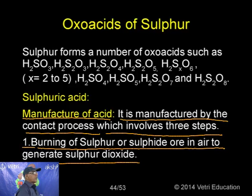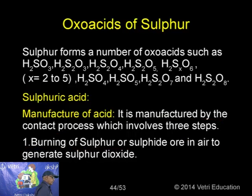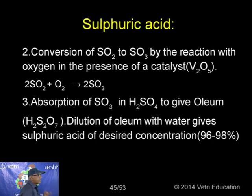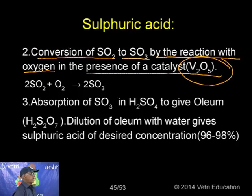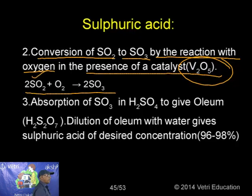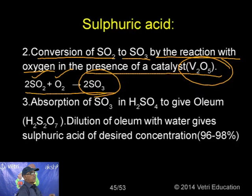SO₂ is also a powerful reducing agent. It reduces ferric to ferrous: 2Fe³⁺ + SO₂ + 2H₂O → 2Fe²⁺ + SO₄²⁻ + 4H⁺. It also reduces permanganate: 2MnO₄⁻ + 5SO₂ + 2H₂O → 2Mn²⁺ + 5SO₄²⁻ + 4H⁺ in acid medium. So SO₂ decolourizes acidic permanganate solution.